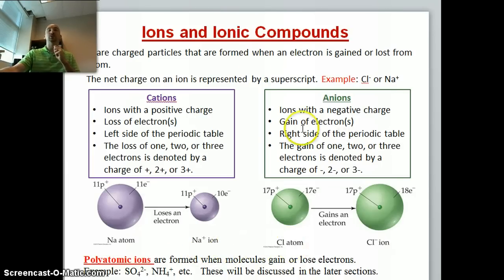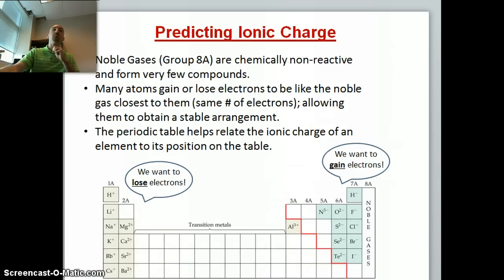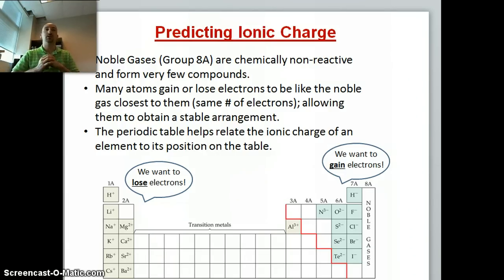An anion is just the opposite, and we can see that here with the chlorine. How do we predict if an atom will gain or lose an electron? We turn to the chemist's best friend, the periodic table. Elements on the left want to lose electrons, and elements on the right would like to gain electrons. These are the common cations and anions, which you should know very well. You should know which ones are cations and which ones are anions.